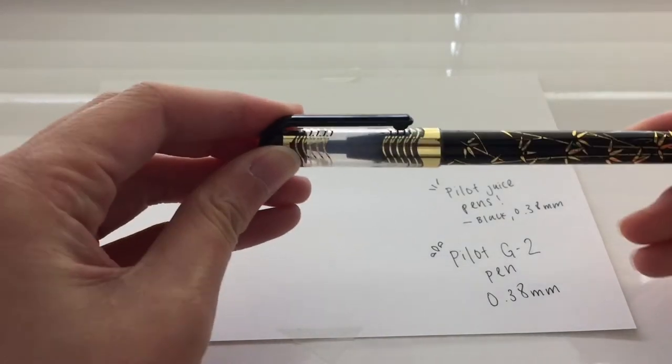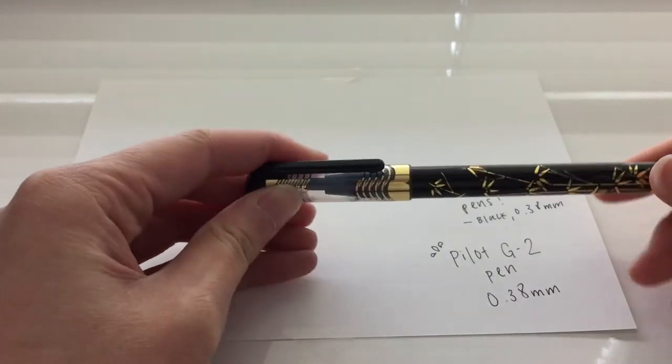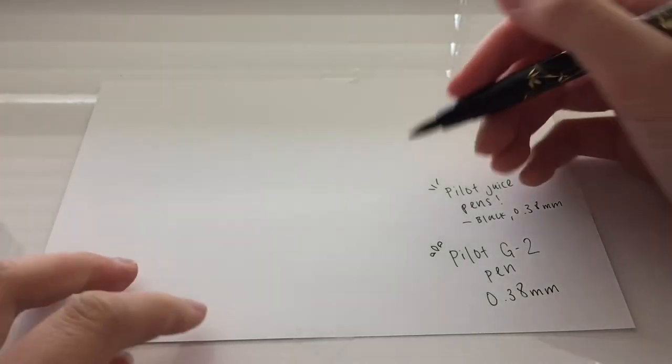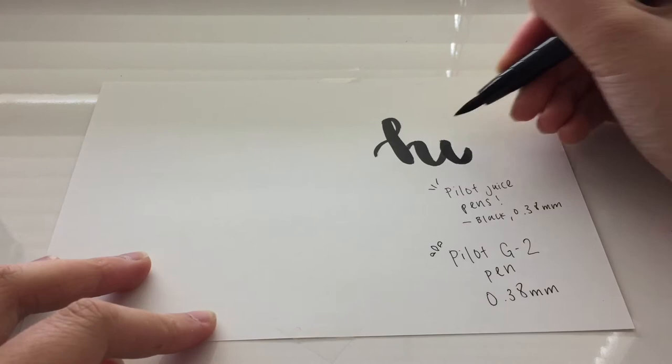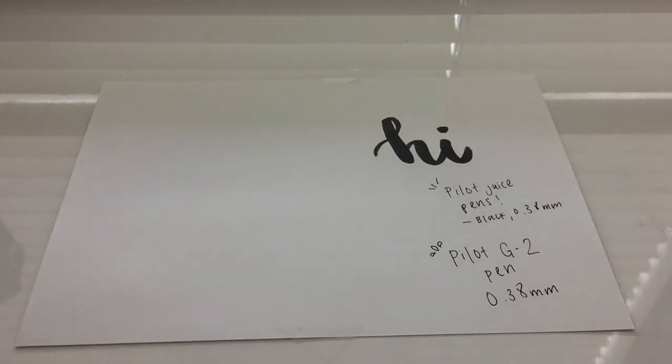The next stationery item I like is the Daiso brush pen and it's really good because it's really flowy and flexible, but you have to be careful with this pen because it does fray easily so watch out for that. It only comes in black.